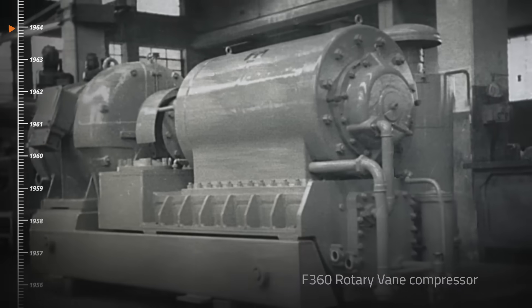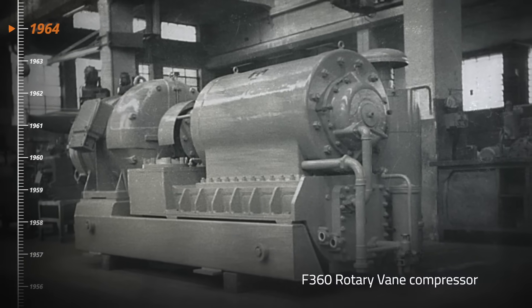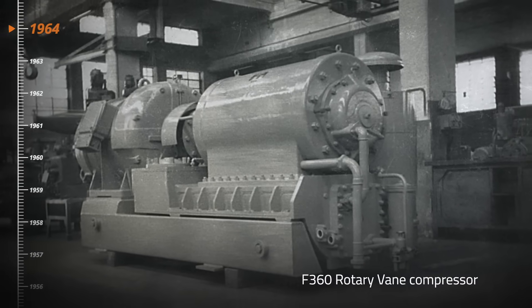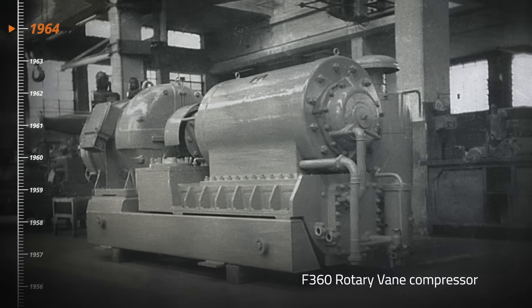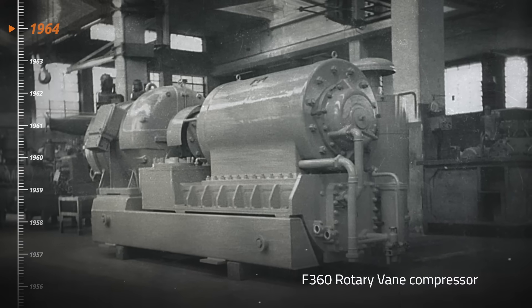The F360 is the crown of the rotary vane compressors from the first generation of Panemofere. Some units are still running after 50 years of continuous operation, at low speed and with water cooling.